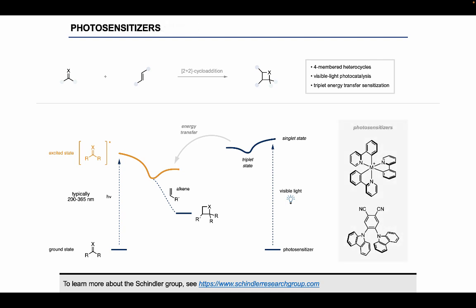There are a variety of different photosensitizers that can perform these reactions. They generally fall into two main categories: metal-based photocatalysts, often iridium and ruthenium-based, and also completely organic photosensitizers.